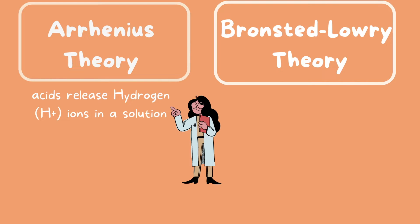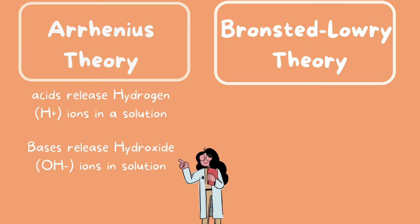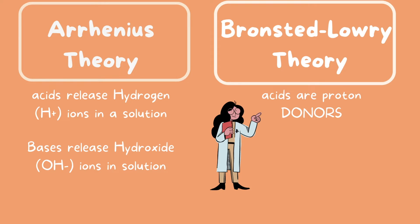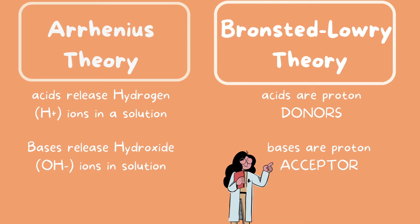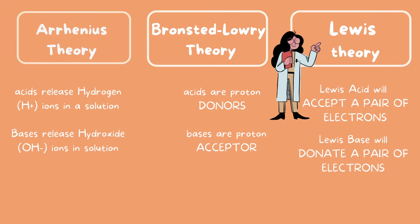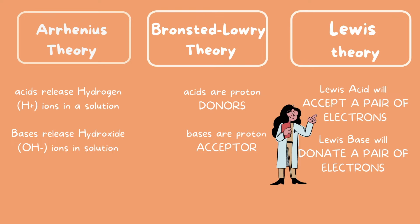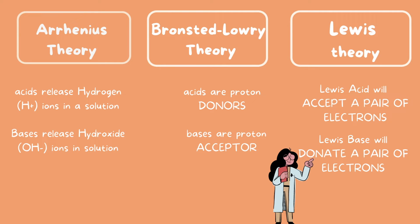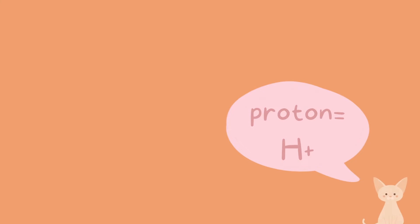The Arrhenius theory states that acids release hydrogen ions in a solution and bases release hydroxide ions in a solution. The Bronsted-Lowry theory defines acids as proton donors and bases as proton acceptors. The third theory — for those enrolled in high school and college chemistry — is the Lewis theory, which states that acids accept a pair of electrons and Lewis bases donate a pair of electrons. One helpful hint: a proton is basically a hydrogen ion.